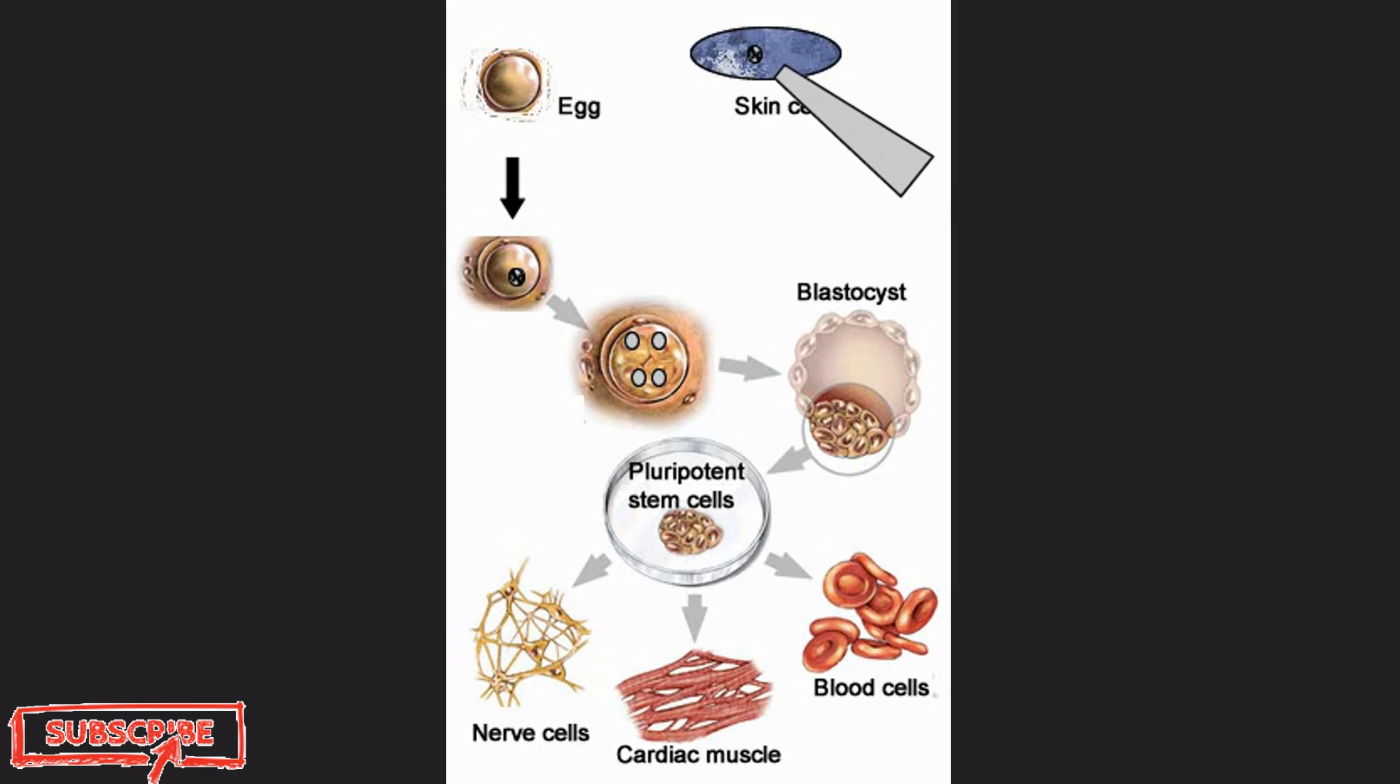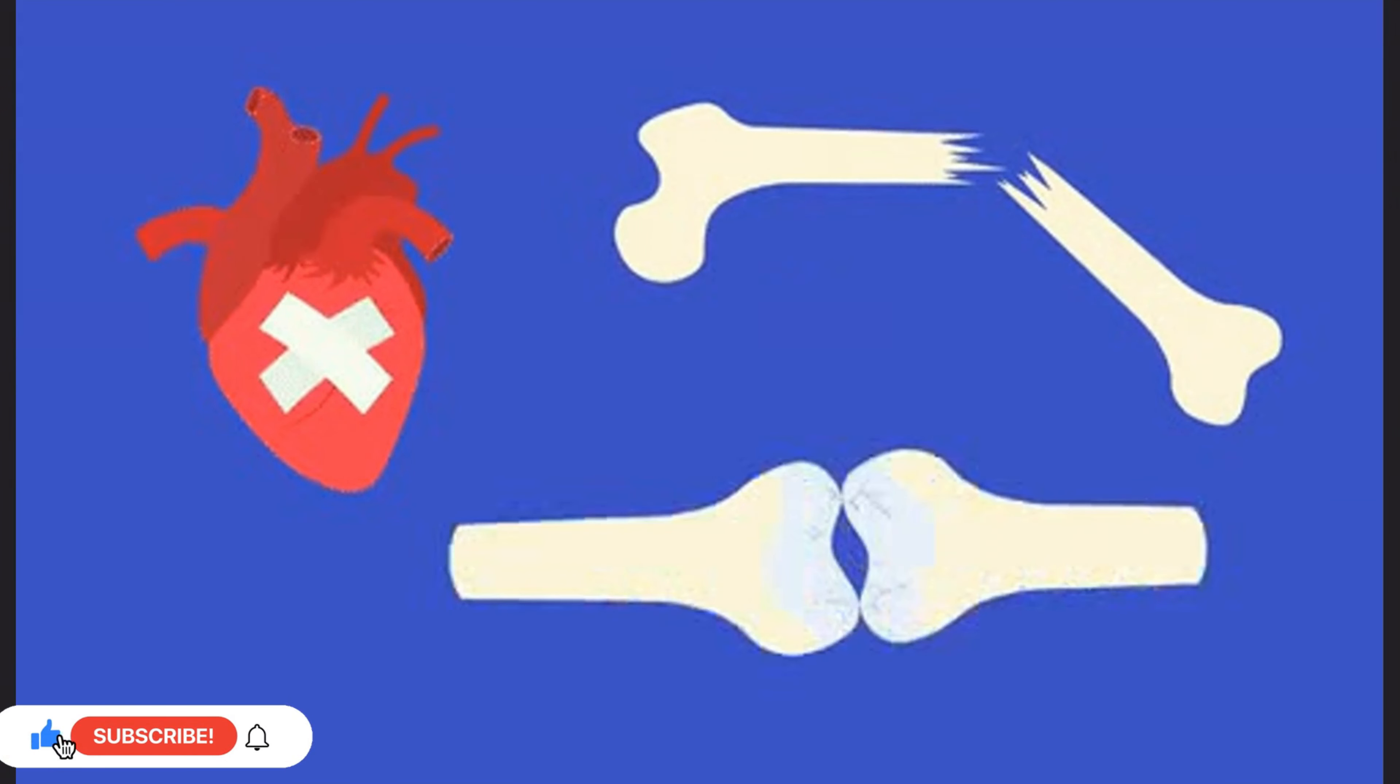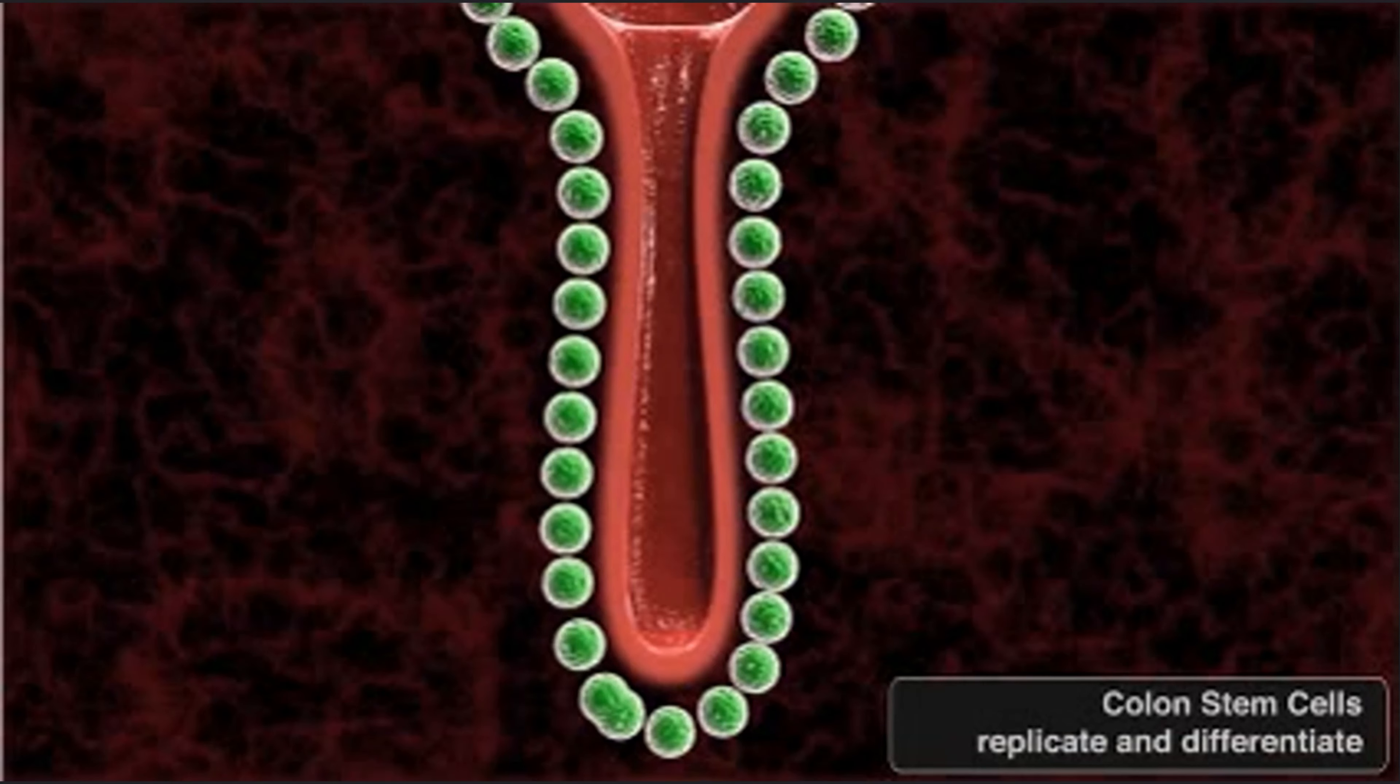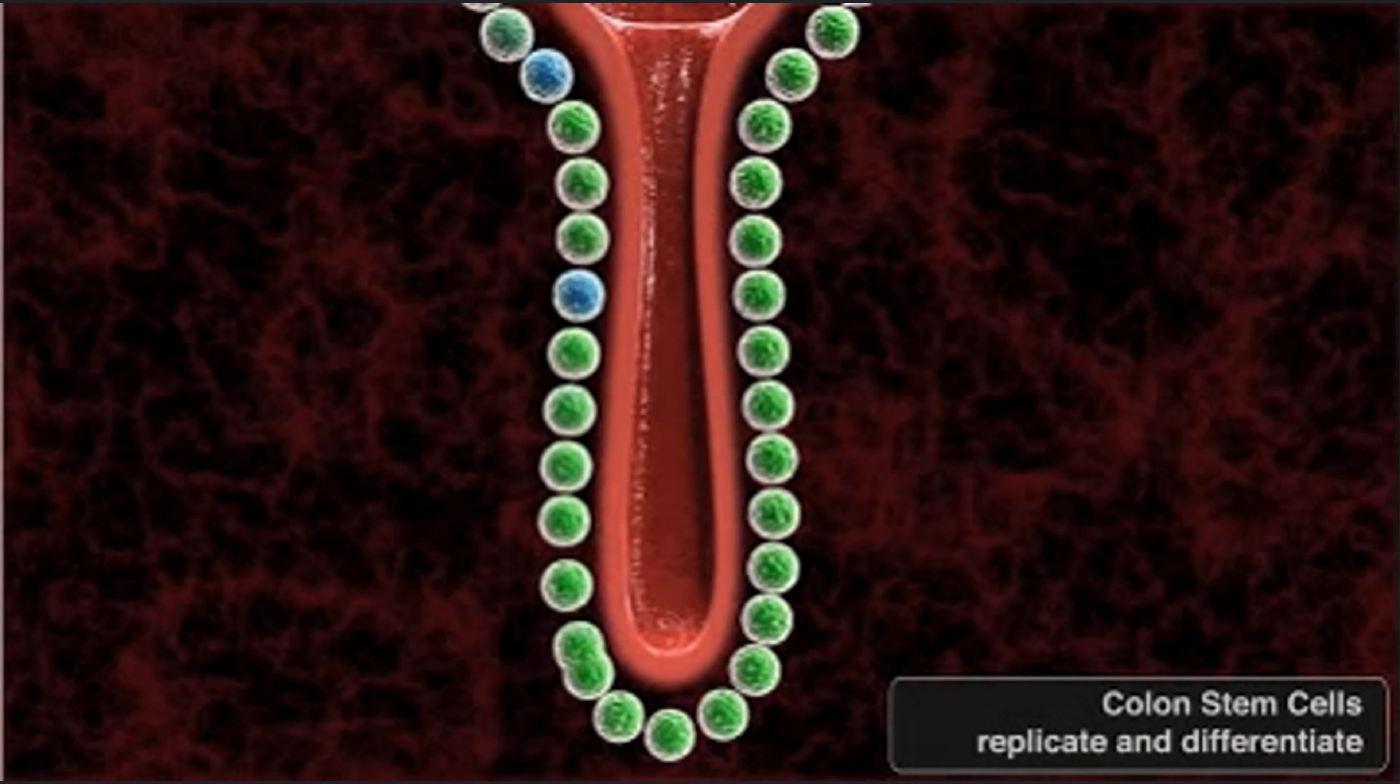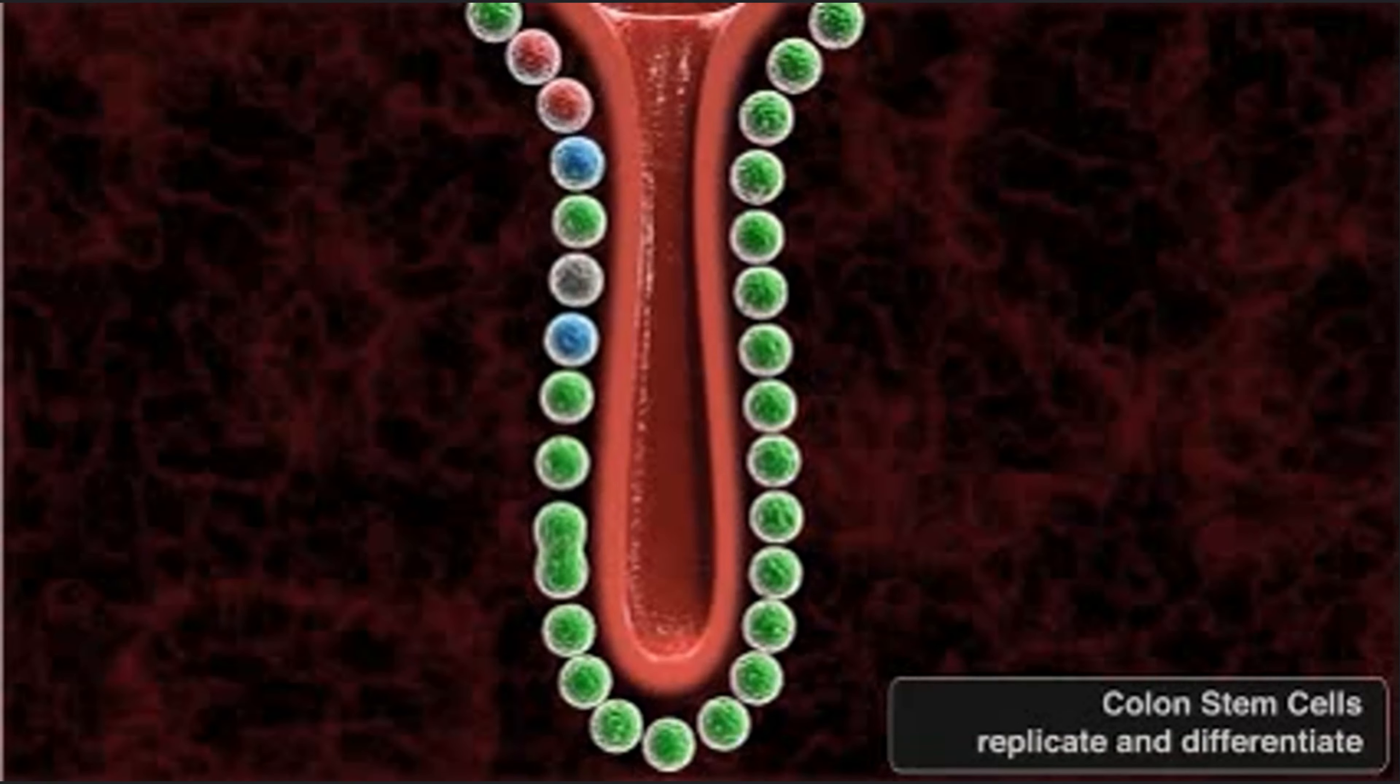According to recent findings, the first-ever synthetic model embryos for human beings have been successfully created by scientists. A team of scientists from the United States and the United Kingdom have successfully produced synthetic structures akin to human embryos using stem cells. This breakthrough was accomplished without the involvement of eggs or sperm.